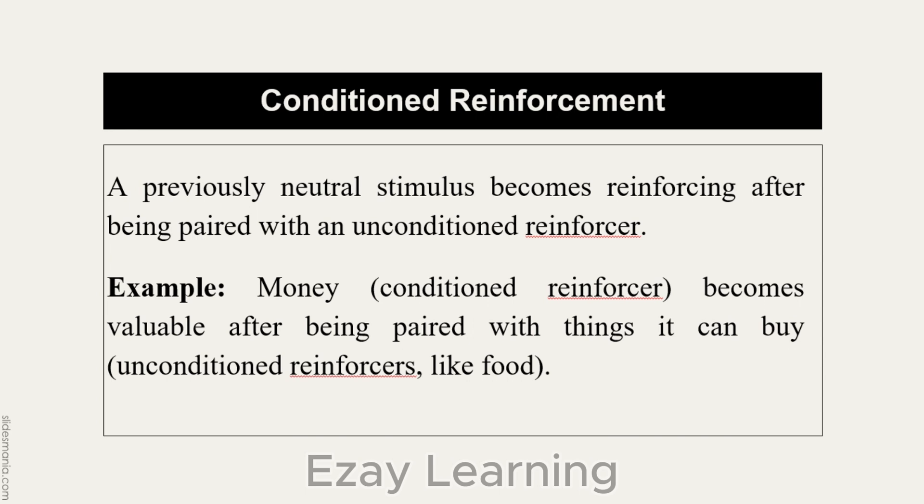For example, money is a conditioned reinforcer. If you give someone money it is initially a neutral stimulus, but when you associate money with purchasing something — since you cannot eat money, you use it to buy things — money becomes valuable when you use it to buy unconditioned reinforcers like food and water. So money becomes a conditioned reinforcer.